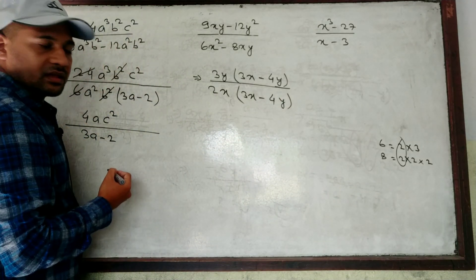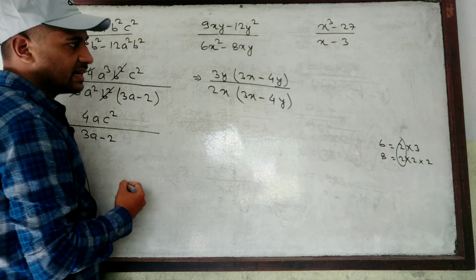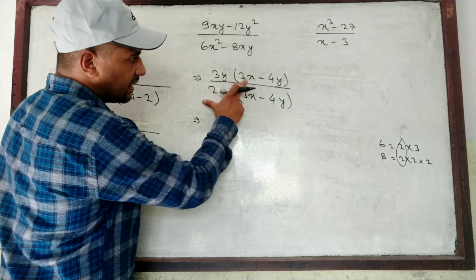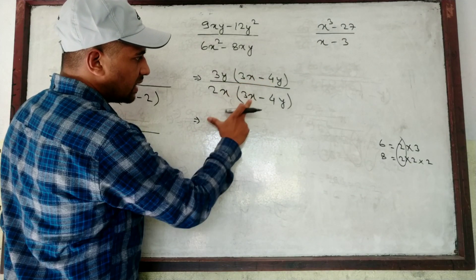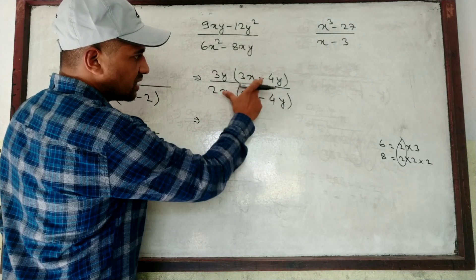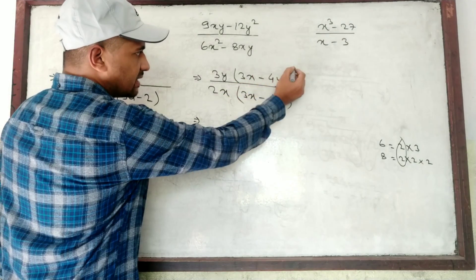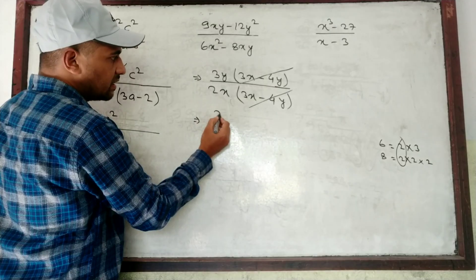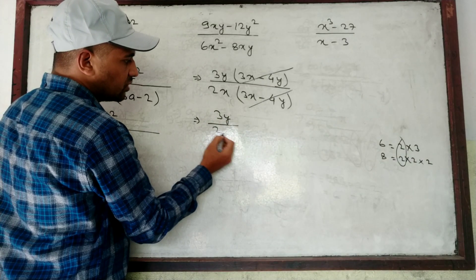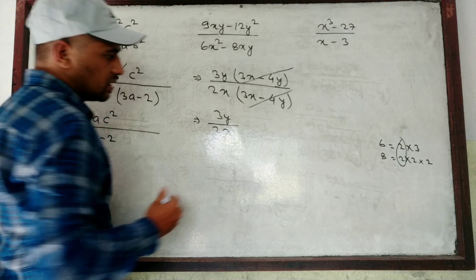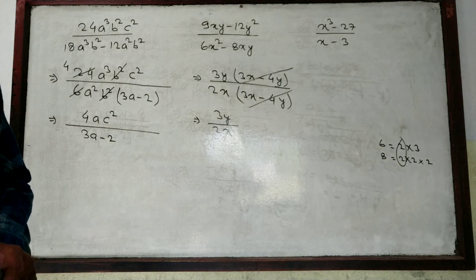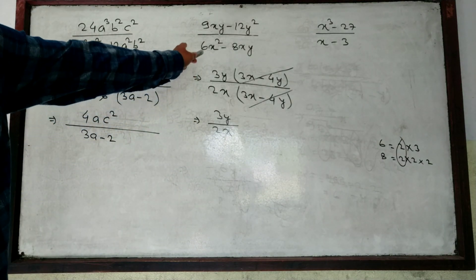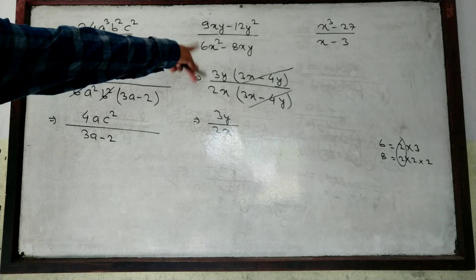Now look at what cancels: (3X minus 4Y) in numerator and (3X minus 4Y) in denominator are like terms, so they cancel. What remains is 3Y in the numerator and 2X in the denominator. So the answer is 3Y divided by 2X.